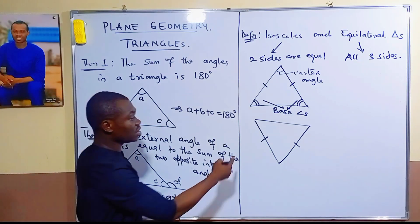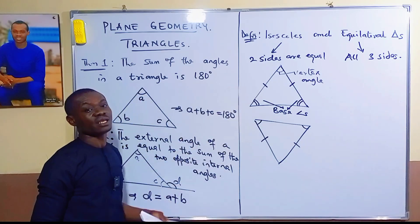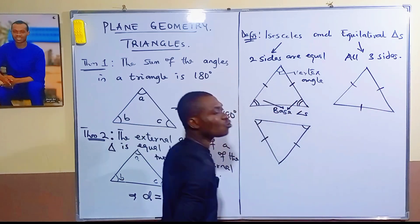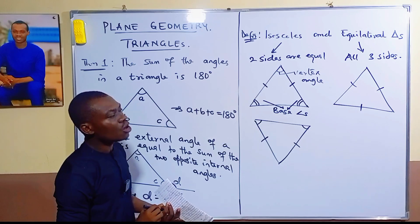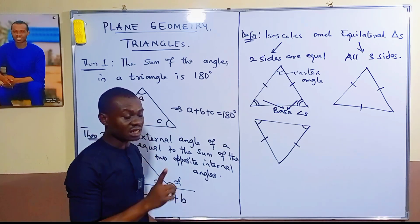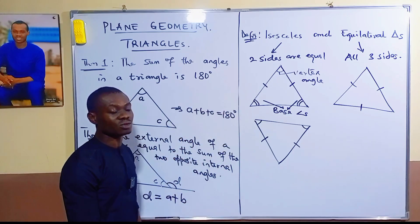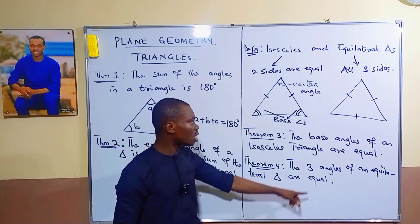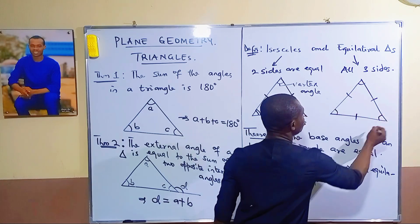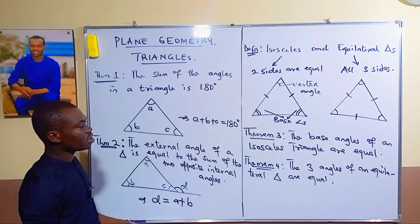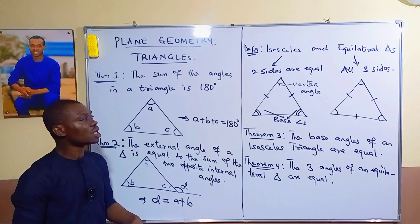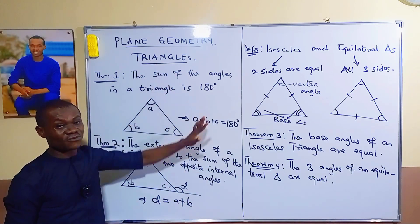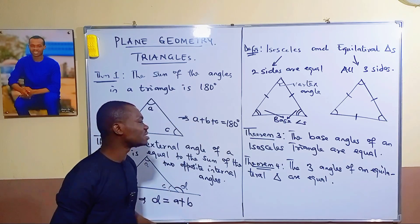So the two base angles of an isosceles triangle are always equal. In an equilateral triangle, all three sides are equal and all three angles are equal. These four theorems are the tools you need to handle any problem in geometry involving triangles.